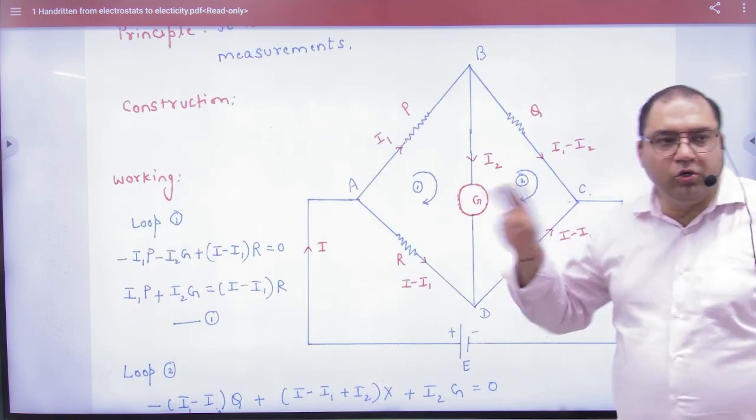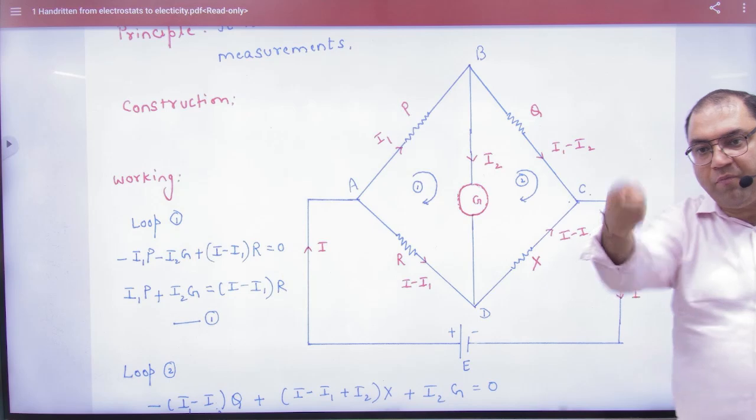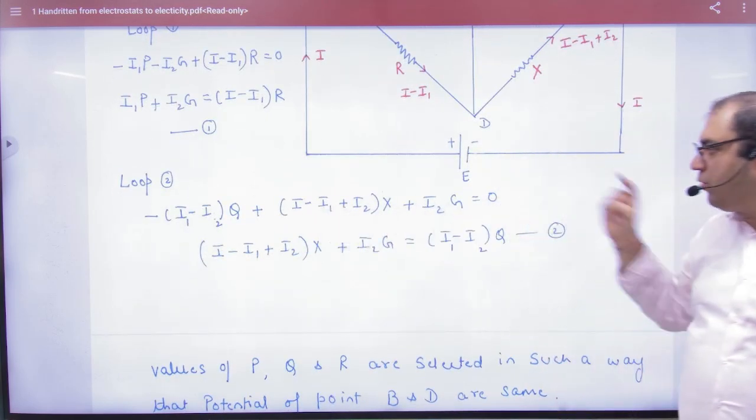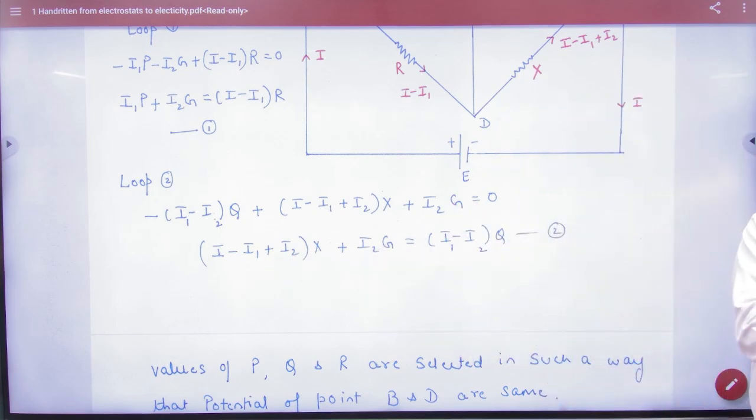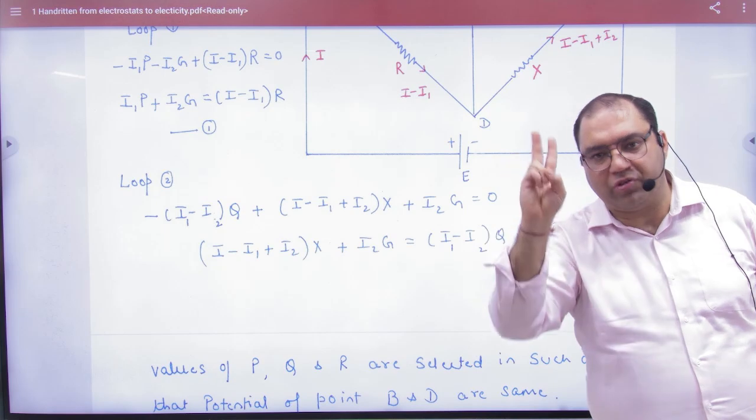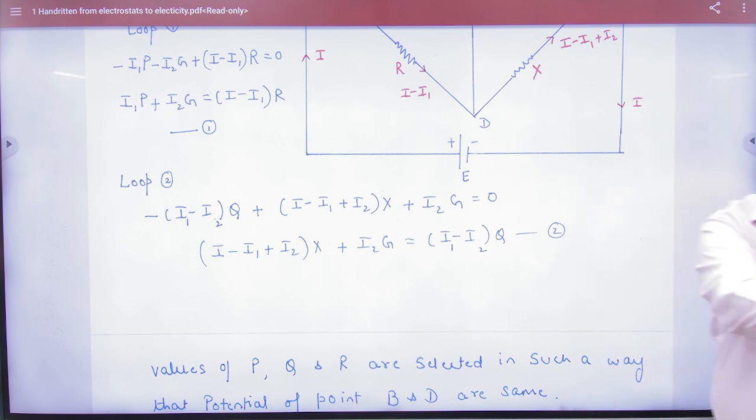Now work on loop number two. Apply Kirchhoff's second law to loop two again. Going in the direction of current: minus Q·(I1 minus I2). Then going here, opposite to current: plus X·(I minus I1 plus I2). Then going up, the current is coming down so opposite to current: plus I2·G. So again we applied the loop law, sum equals zero. Negative terms on one side, other terms on the other side gives equation number two. You applied Kirchhoff's second law in the first loop - one equation. In the second loop - second equation.